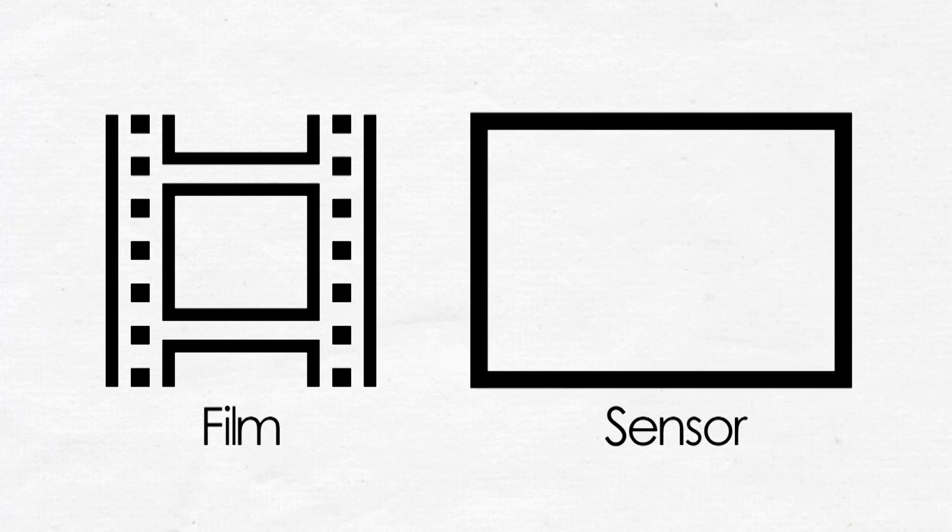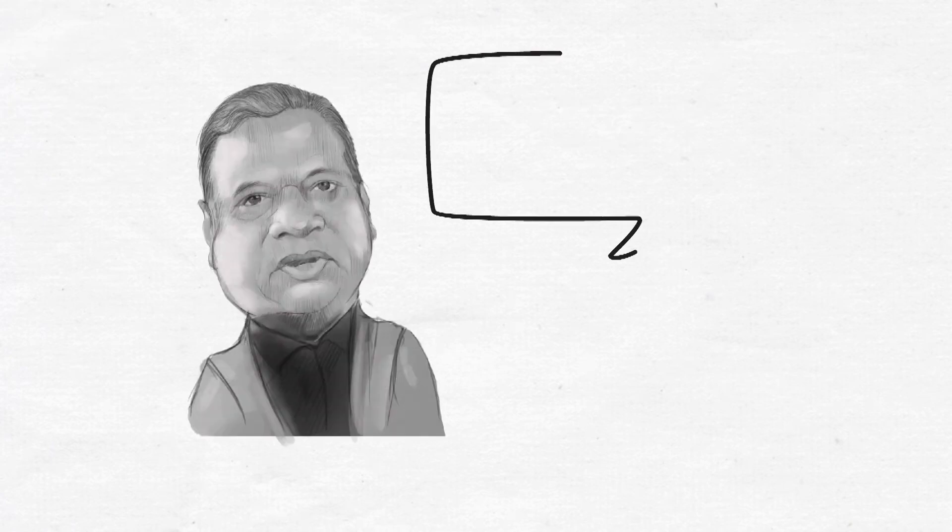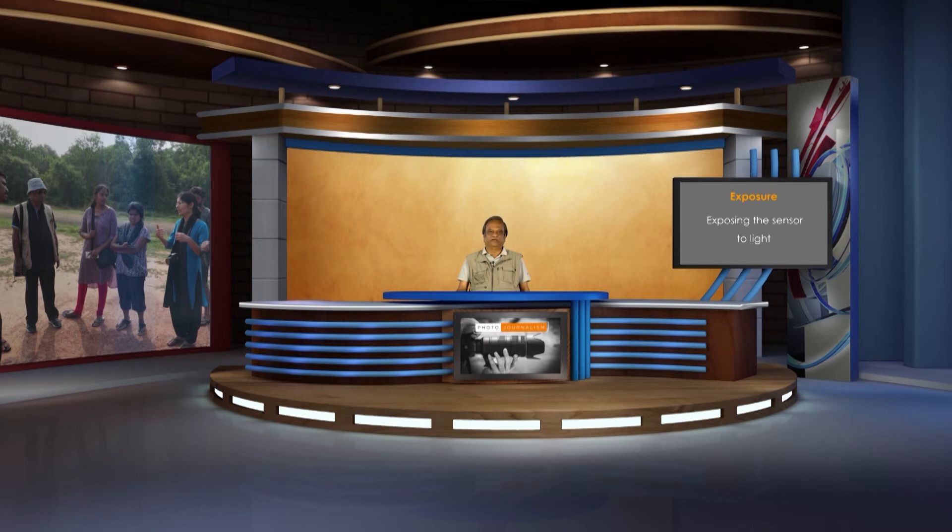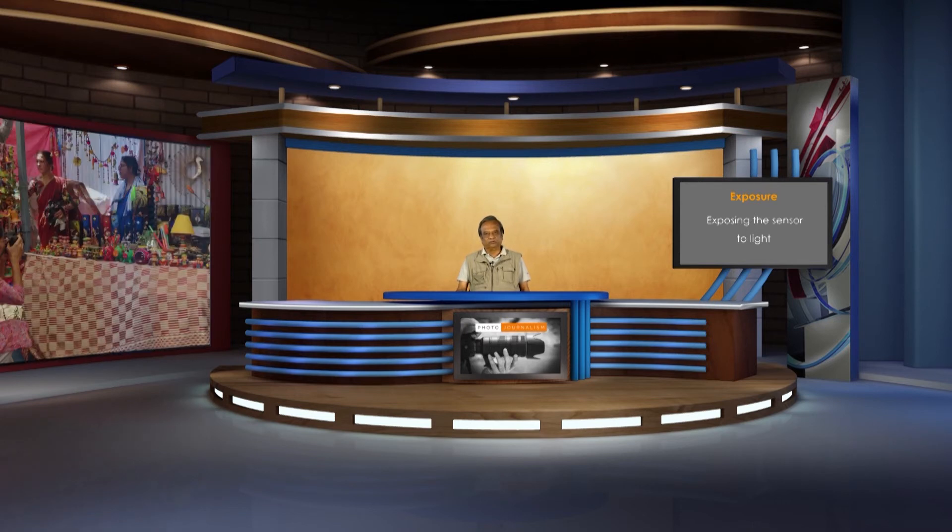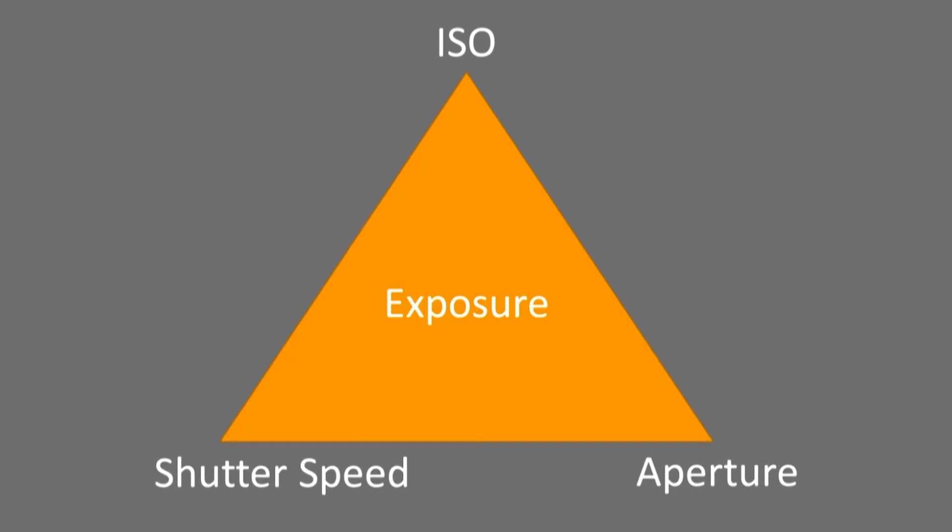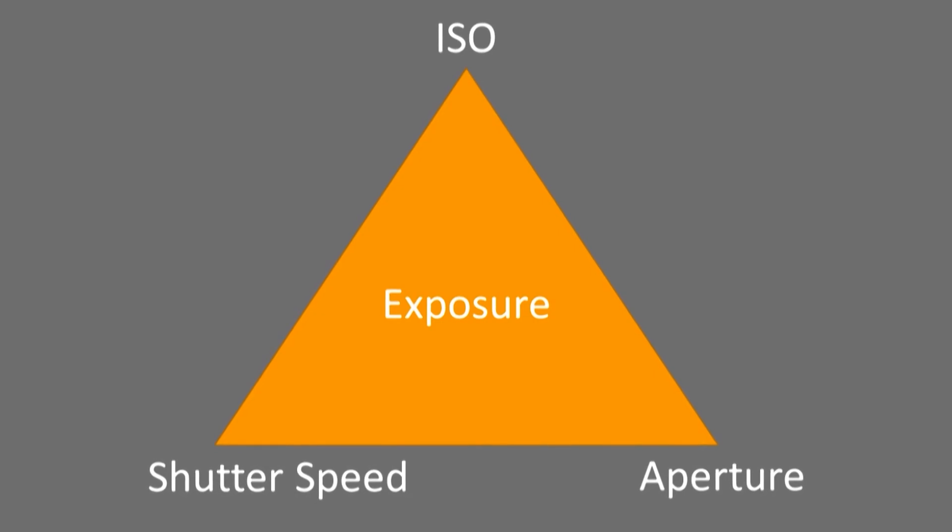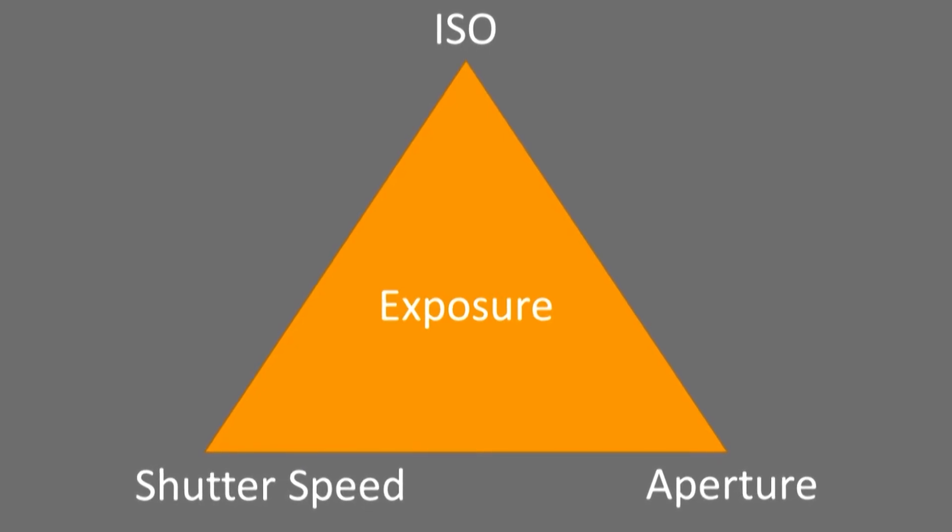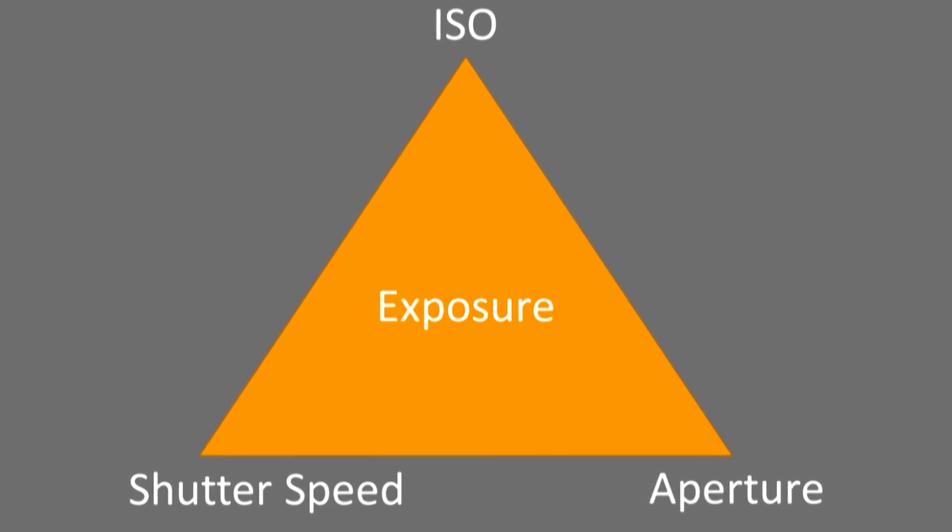Now you cannot take the sensor out, expose it to light, and say I made a photograph. There is a dark box which is the camera and there are certain controls in the camera which will help you to make this exposure. The controls were there in the terms which we discussed earlier. So the controls in the camera which will help you to make this exposure are: one, shutter speed; two, aperture; and three, the ISO. These three form what is known as the exposure triangle, where you have the ISO on top, the shutter speed and the aperture on the bottom forming a triangle. This is what is commonly referred to in most photographic internet or books as the exposure triangle.